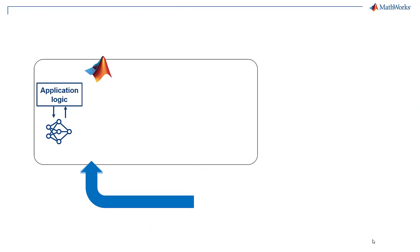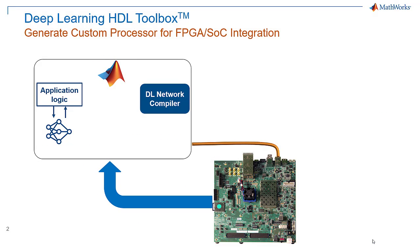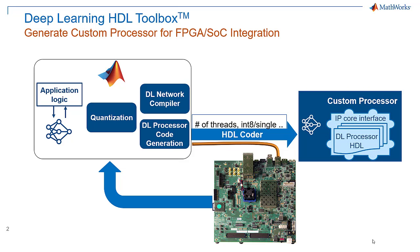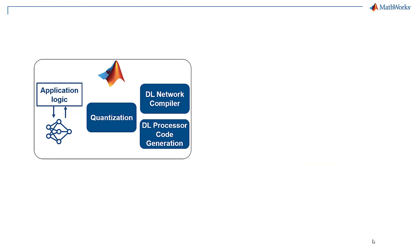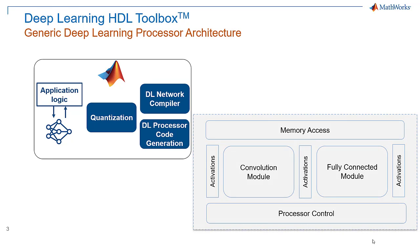But what if you want to customize the FPGA implementation to improve performance or to target a custom board? For this, you can use MATLAB to configure the processor and to drive HDL Coder to generate an IP core with RTL and AXI interfaces. This is all based on a deep learning processor architecture that has generic convolution and fully connected modules, so you can program your custom network and the logic that controls which layer is being run along with its activation inputs and outputs.